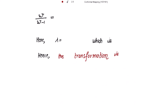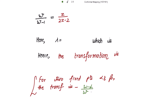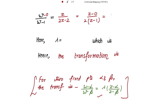So w/(w - 1) = z/(2z - 2). Recalling the normal form for two finite fixed points α and β: (w - α)/(w - β) = λ · (z - α)/(z - β). The right-hand side can be written by factoring 2 from the denominator as (1/2) · (z - 0)/(z - 1). Comparing, we identify λ = 1/2.